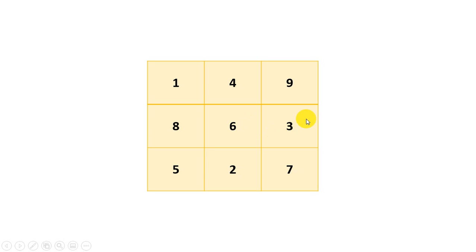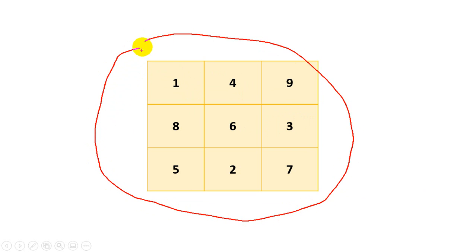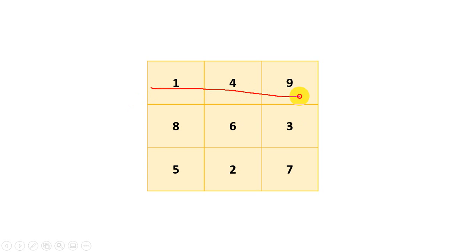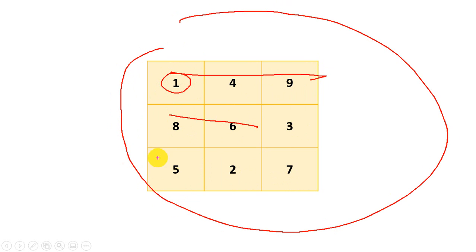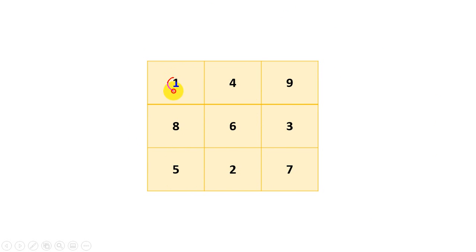Now suppose I want to create a table like this in the browser. So this is a table and the horizontal ones are called rows. This is one row, this is one row, and this is one row. And each small one is called a cell. The vertical ones are columns, and the small one is a table cell.